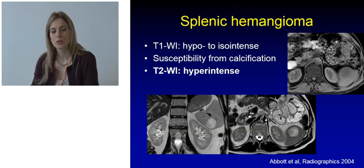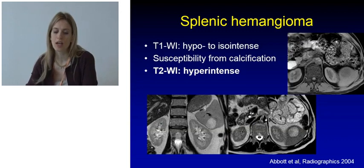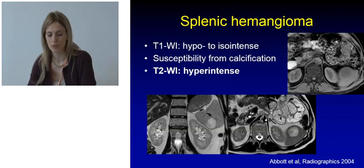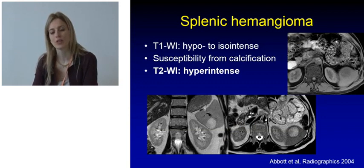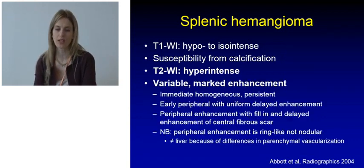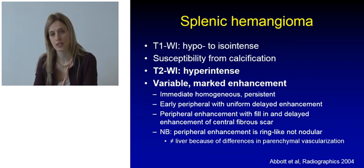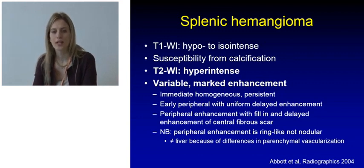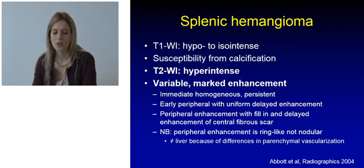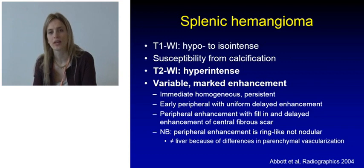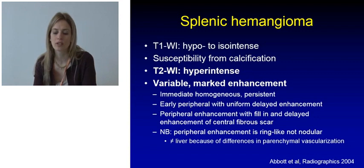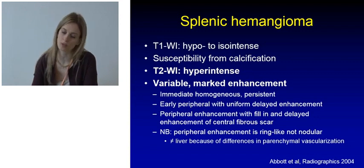On MRI, hemangiomas are going to be hypo- to iso-intense on T1-weighted imaging and can show susceptibility if there are calcifications. They are typically hyper-intense on T2-weighted images. After contrast administration, enhancement patterns can vary: immediate homogeneous and persistent enhancement; early peripheral enhancement with uniform delayed enhancement; or peripheral enhancement with fill-in and delayed enhancement of a central fibrous scar. Notably, the peripheral enhancement is ring-like and not nodular, as seen with liver hemangiomas, due to inherent differences in parenchymal vascularization between the spleen and liver.